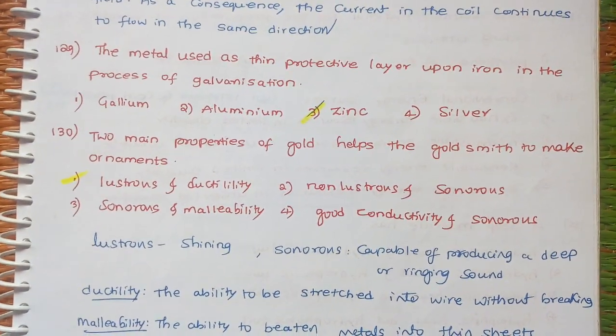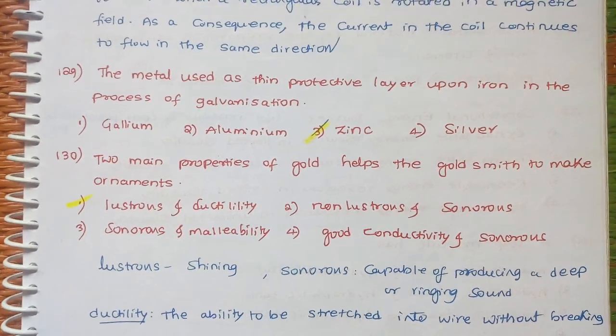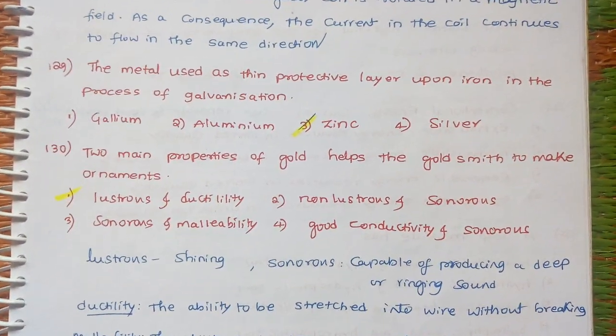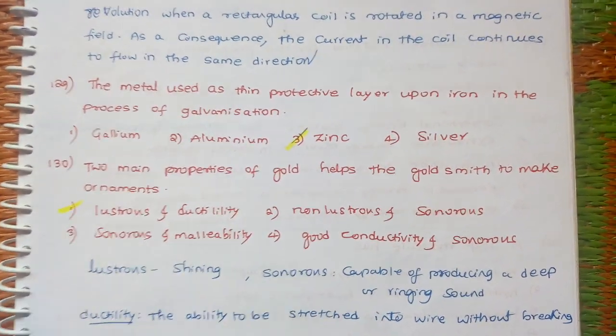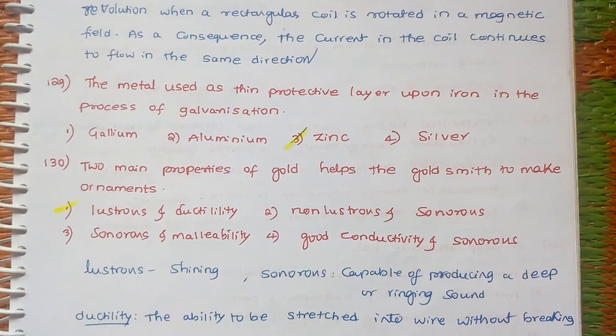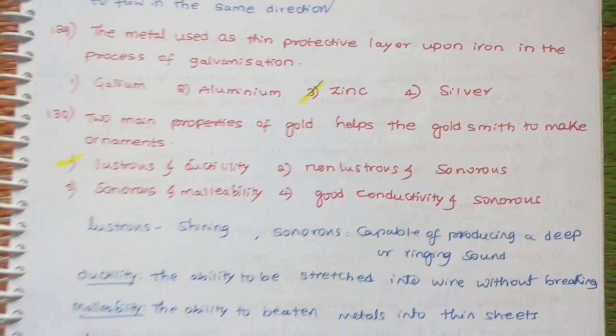Two main properties of gold help the goldsmith to make ornaments. Gold should be always lustrous and have ductility. Lustrous means shiny, and ductility means the ability to be stretched into wire without breaking.